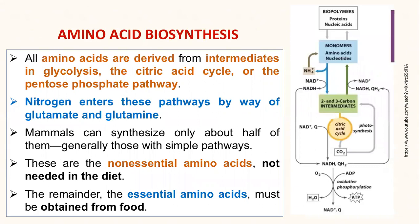Looking into how amino acids are formed: amino acids derive their name from 'amine,' meaning a nitrogen-containing compound. So these amino acids contain an amine group as well as a carboxyl group. Amino acids acquire their nitrogen from atmospheric nitrogen, and this nitrogen enters a pathway which leads to the formation of amino acids through glutamate and glutamine.